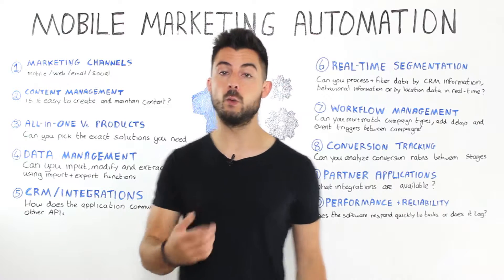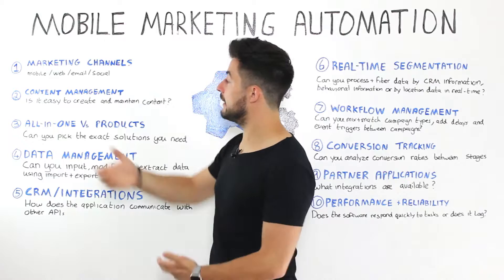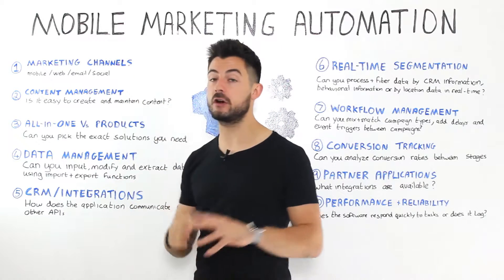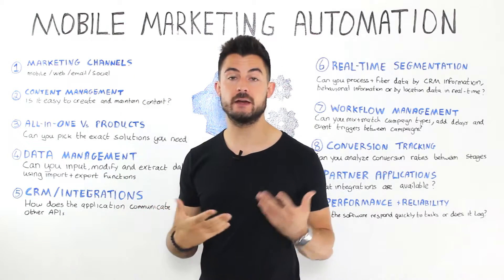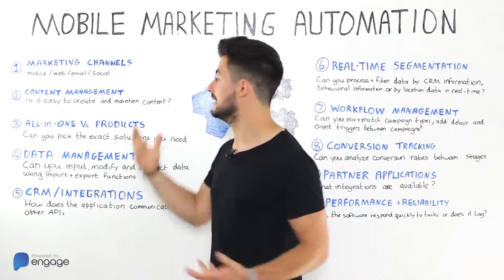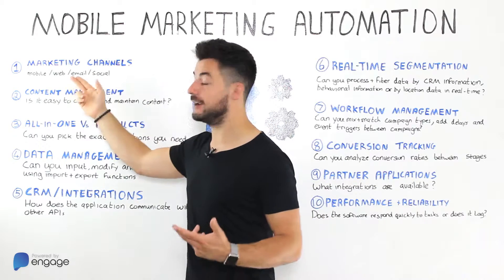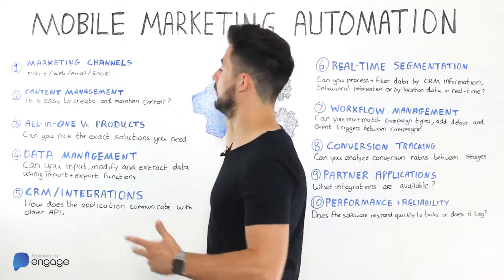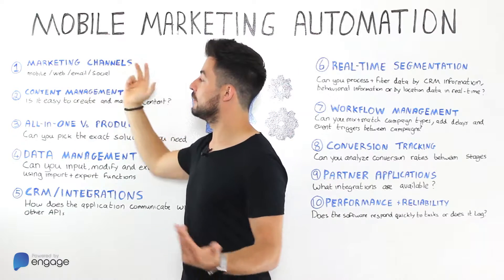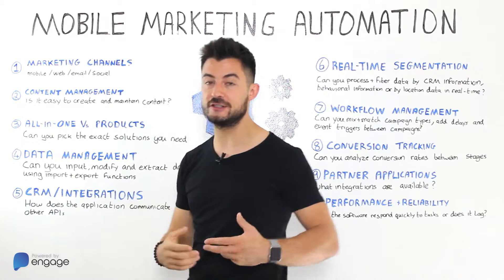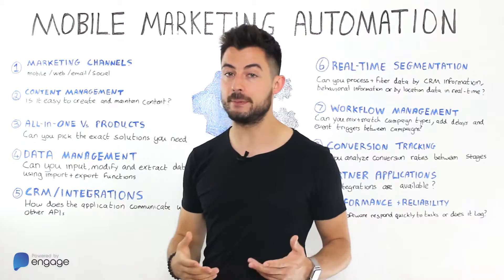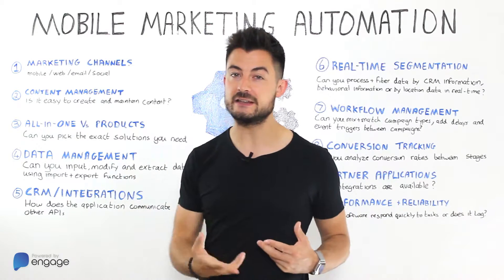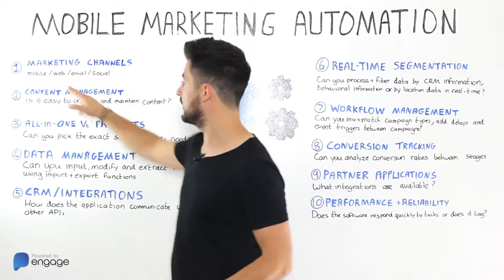First of all, when you're considering an MMA solution you want to think about the channels that you can broadcast to and communicate with customers in. The obvious one here of course is mobile — we are talking about mobile marketing automation systems. So we're talking about push notifications, in-app messages, in-app inboxes, message centers, feed cards, all of that stuff.